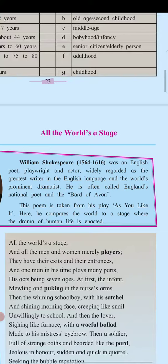The figures of speech used in the poem are alliteration, consonance, hyperbole, inversion, repetition, simile, and transferred epithet. An example of simile is: 'And then the lover sighing like furnace with the awful ballad,' where the lover's sigh is compared to the sound of a furnace.